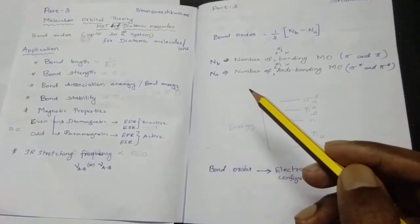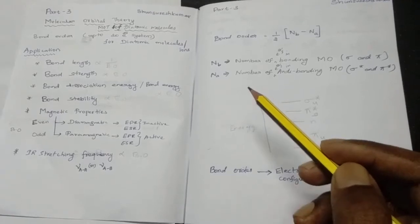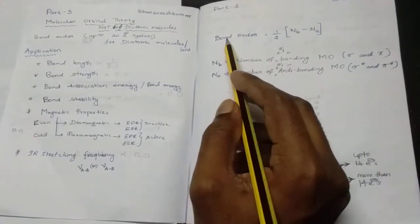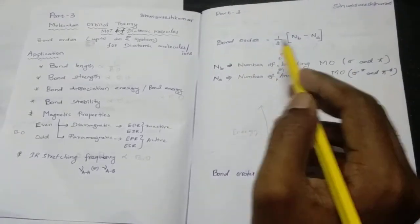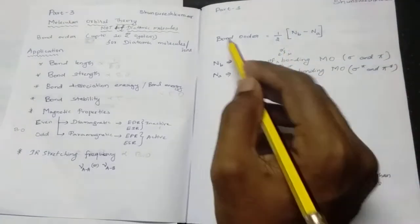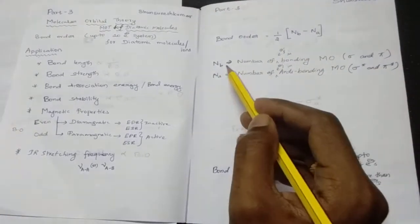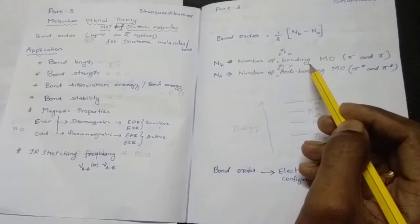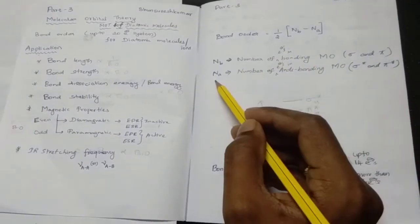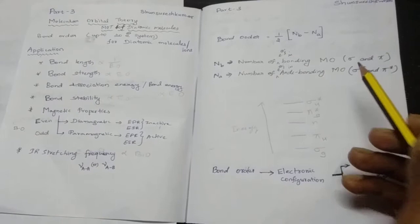How can we calculate bond order? The formula for bond order is: bond order equals one-half times (NB minus NE), where NB is the number of electrons in bonding molecular orbitals and NE is the number of electrons in anti-bonding molecular orbitals.